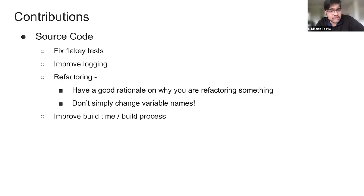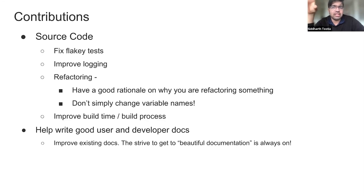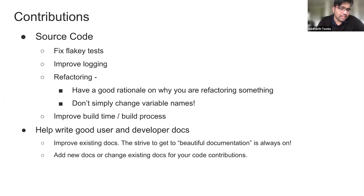You can also make source code changes that help improve build time or the build process itself. Besides source code, you can also help write good user and developer docs, or improve existing docs. I explicitly use the term 'beautiful documentation' because documentation that is super clear, concise, with the right amount of information and coverage — the drive to get there is still ongoing. And obviously if you're making a source code contribution, also think about complementing that with new or updated docs.